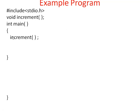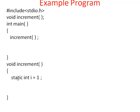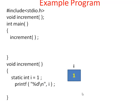The first statement calls the increment function, so the function increment is called for the first time. When this function is called, the control leaves the main function and enters increment function. Then begins the execution of this increment function. Inside the function, we declared a static variable i with initial value 1. Memory is allocated and the value 1 will be stored in that memory. Then the next statement printf is executed — the current value of i in memory is 1, so on the output we can see 1 printed.